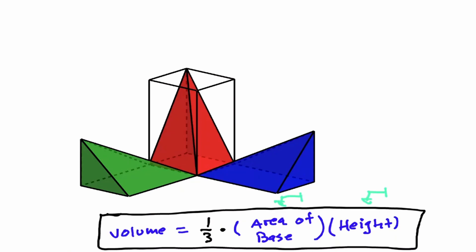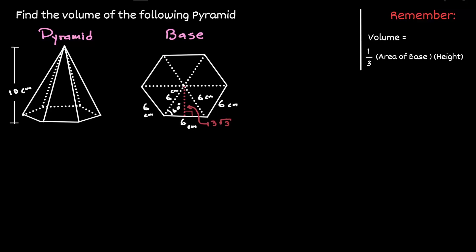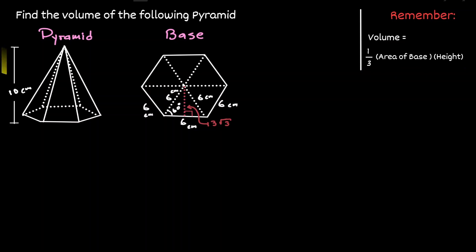Now that we have established this formula, let's take a look at one example. Given the pyramid on the left, let's find the volume of it. To find the volume of a pyramid it is equivalent to one third times the area of the base times the height. Notice that we are given the height of this pyramid — it is equivalent to 10 centimeters. So now we need to think about how we can find the area of the base.